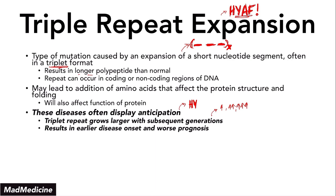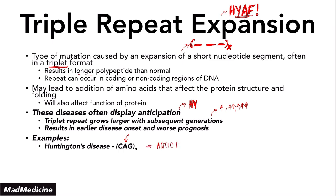This is a very high yield topic and you will be tested on it. The classic example of anticipation is Huntington's disease. In Huntington's disease, you have repeats of the CAG codon, which repeats over and over. Huntington's is the classic condition that presents with anticipation. This is something you need to remember — you are going to see this on the exam and in test banks.